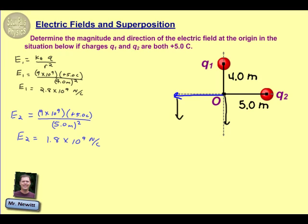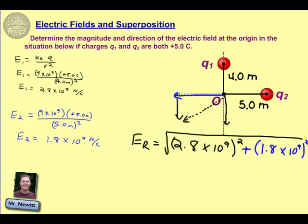Our resultant is essentially going to be the hypotenuse of that right triangle. So we're just going to do a little Pythagorean theorem here with our two electric fields to solve for this. The resultant electric field is going to be the square root of those two fields squared and added together. So 2.8 times 10 to the 9th squared plus 1.8 times 10 to the 9th squared. We'll square both of those terms, add them together, and take the square root of that.